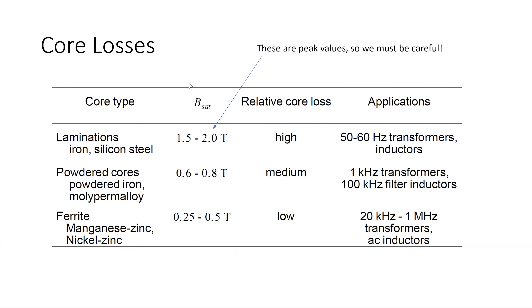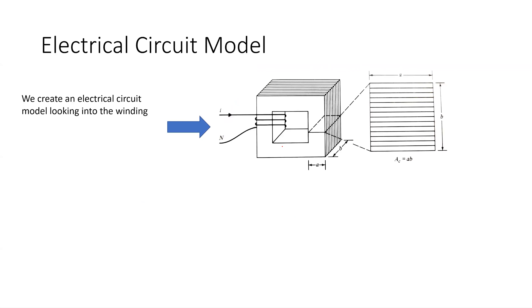Inside these things we have hysteresis loss and eddy current losses. Different materials have different saturation levels — different peak B fields they can carry. Ferrite has a max B field of about a quarter to half a Tesla. For iron at 60 Hz, it's somewhere around 1.5 to 2 Tesla. For a graph of 29-gauge M19 steel at 60 Hz, for a given B field this value tells me a power density — for example, at 1.5 Tesla, the loss in that core would be about two watts per pound.